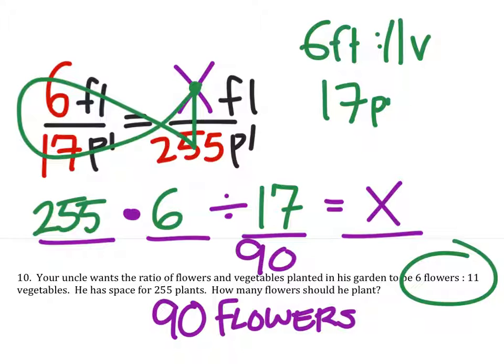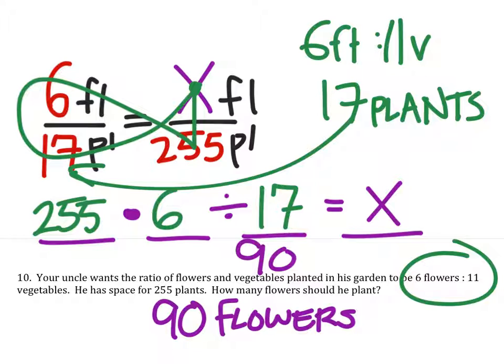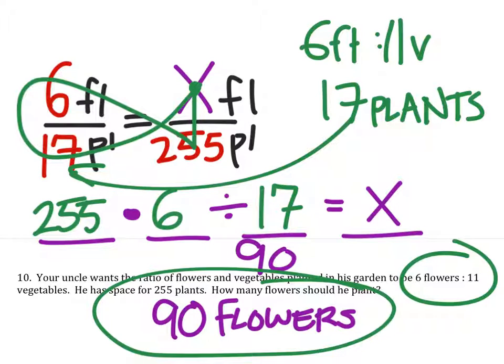And that's a good question. That's where that 17 came from, right here. But ultimately, the answer is 90 flowers.